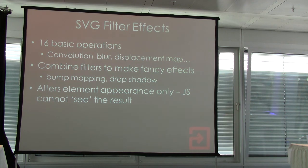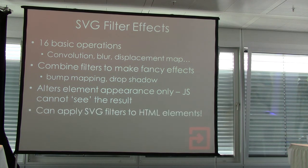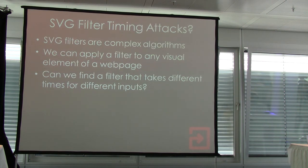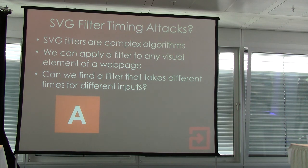SVG filters alter the appearance of SVG but it's a visual thing only — the JavaScript on the web page can't really tell what the result looks like. You can't see those pixels or see the result. But interestingly, in Chrome and Firefox we can apply SVG filters not just to SVG elements but to any HTML element. So this got me thinking: SVG filters are very complex, number-crunching algorithms. If we can apply an SVG filter to, say, an iframe or a link, perhaps we could find a filter that takes a different amount of time to run depending on what element we apply it to — and if the time is different, that will tell us something about those elements.